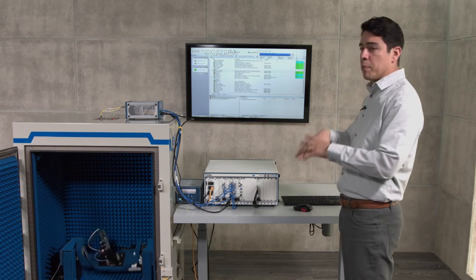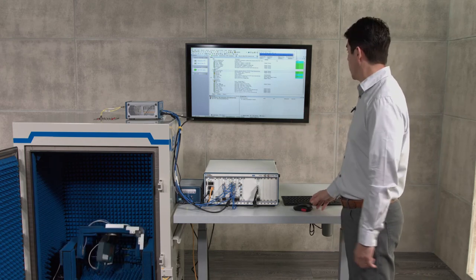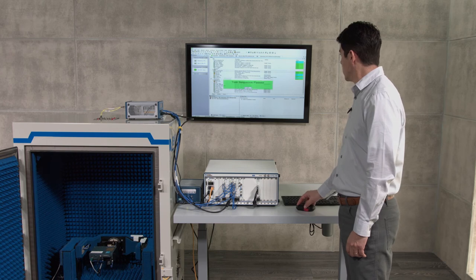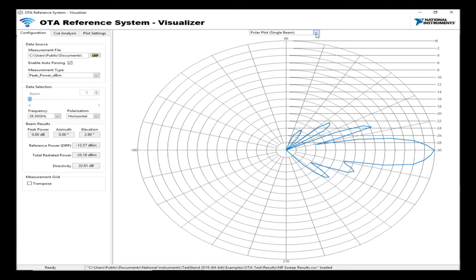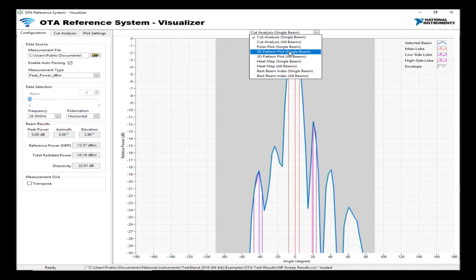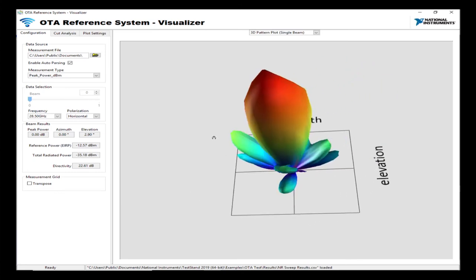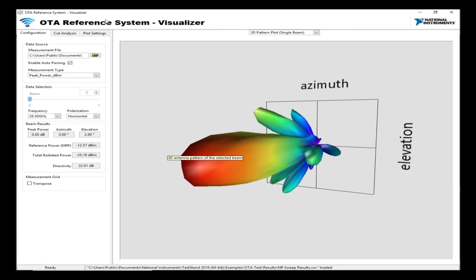Let me go to the visualizer and take a look at the results. So now I can look again at the polar plot. I can do a cut analysis. I can also look at the 3D pattern to see a much smoother surface that shows me what is the behavior of that beamforming. And in addition to that, I can also look at the EVM performance in space.